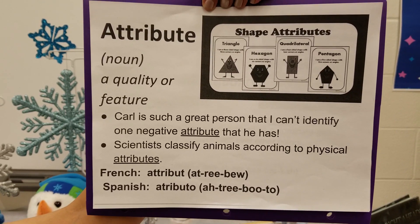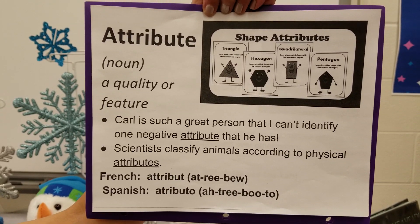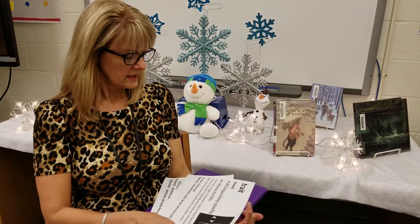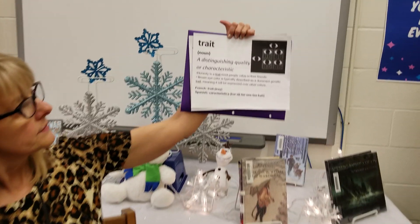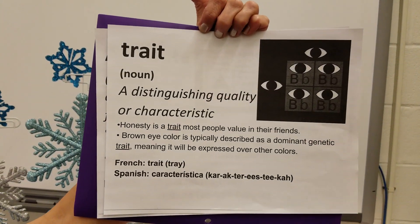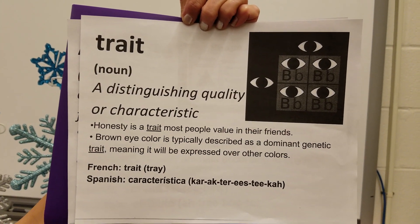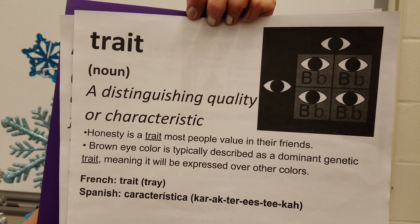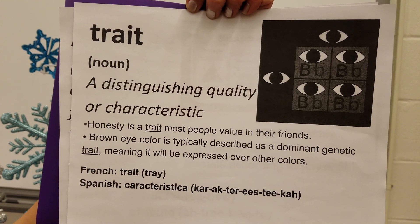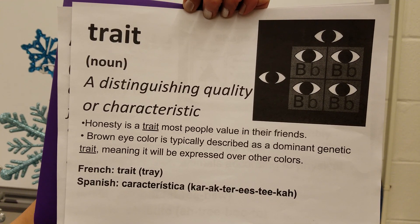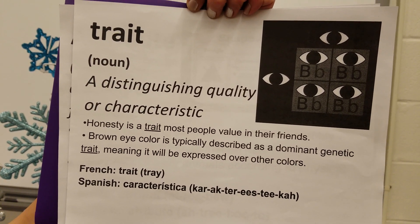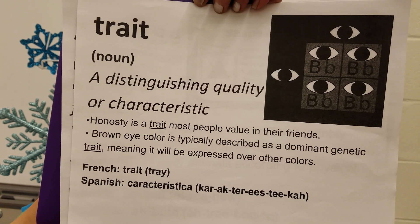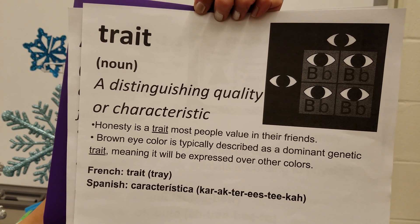That is our first word, which is attribute. Our second word for this week is the word trait. It is also a noun. Definition is a distinguishing quality or characteristic. Sentences: Honesty is a trait that most people value in their friends. Brown eye color is typically described as a dominant genetic trait, meaning it will be expressed over other colors.